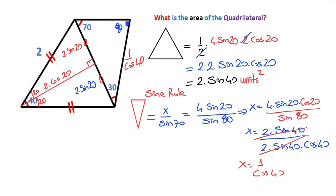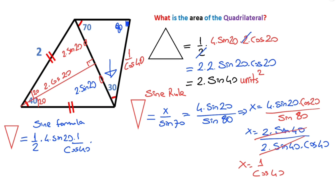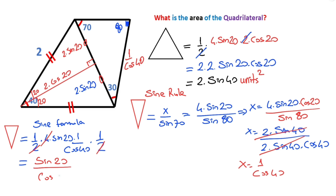Now we can calculate the second triangle's area easily. Using the sine area formula: triangle area = ½ × (4·sin20) × (1/cos40) × sin30. Since sin30 = 1/2, these simplify so the triangle area equals sin20 / cos40 units squared.